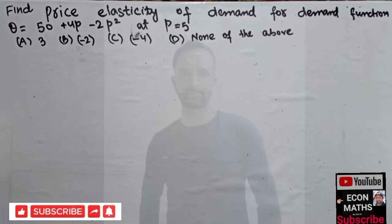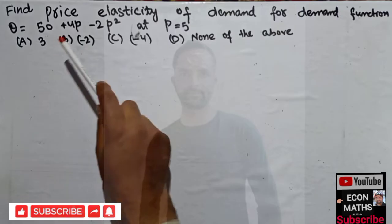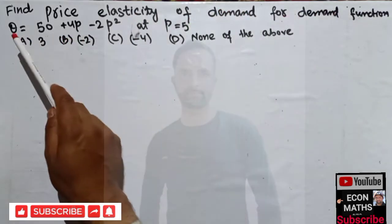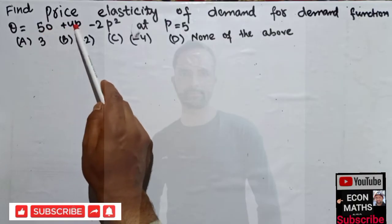In this video we will try to solve a numerical problem on price elasticity of demand. The question is: find price elasticity of demand for the demand function q = 50 + 4p - 2p²